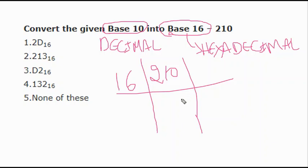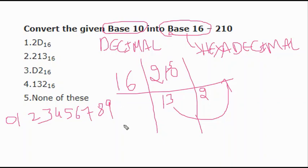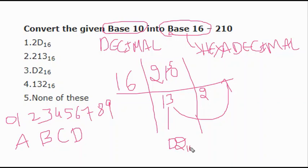Draw the ladder diagram and write 16 beside it for hexadecimal. 210 ÷ 16 = 13, remainder 2. You can't divide 13 by 16, so stop. However, in hexadecimal there are special representations: digits 0–9 remain the same, but 10 is written as A, 11 as B, 12 as C, 13 as D. So the remainder 13 is written as D. The answer is D2 with subscript 16.